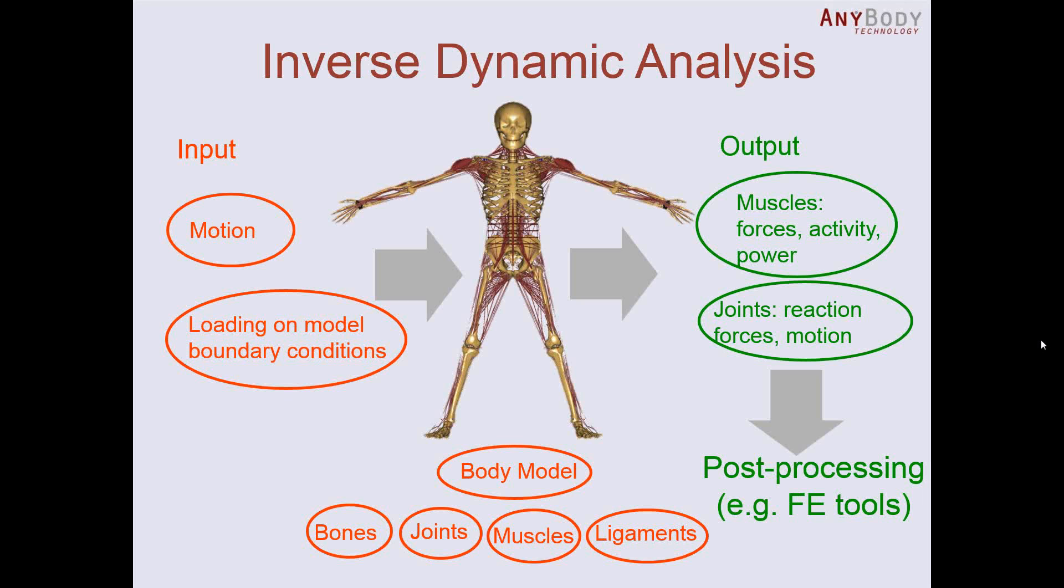This means that the flow of logic is that the system takes the body model consisting of muscles, bones, ligaments, and joints as input, and the movement is also input. And the loads, or the external forces acting on the body, are input. Output is then essentially the internal mechanical properties of the body, so forces in the individual muscles and joints, muscle activations, mechanical muscle power, etc.